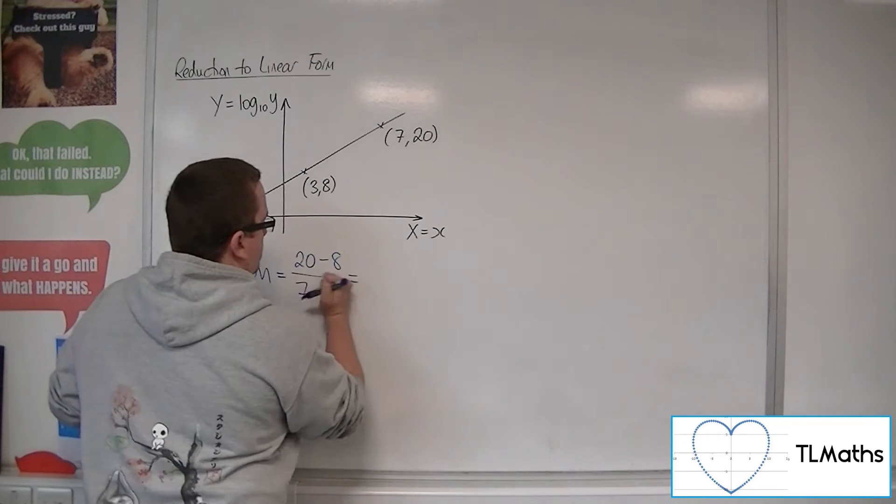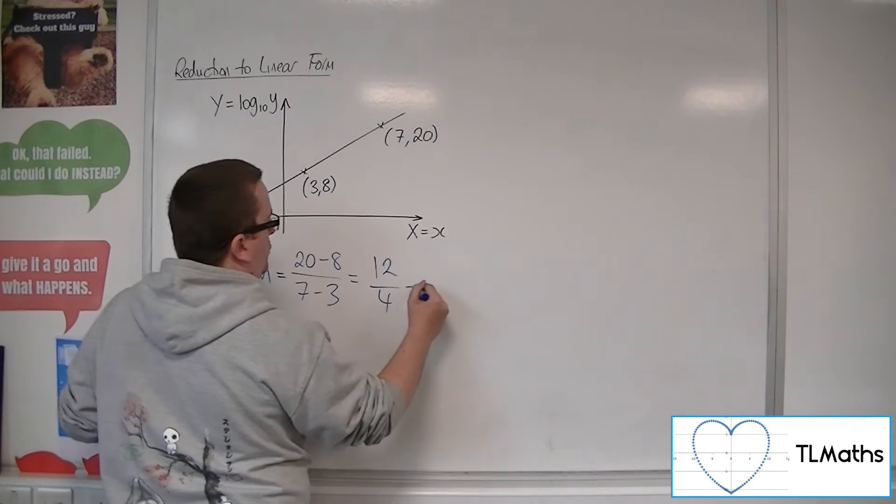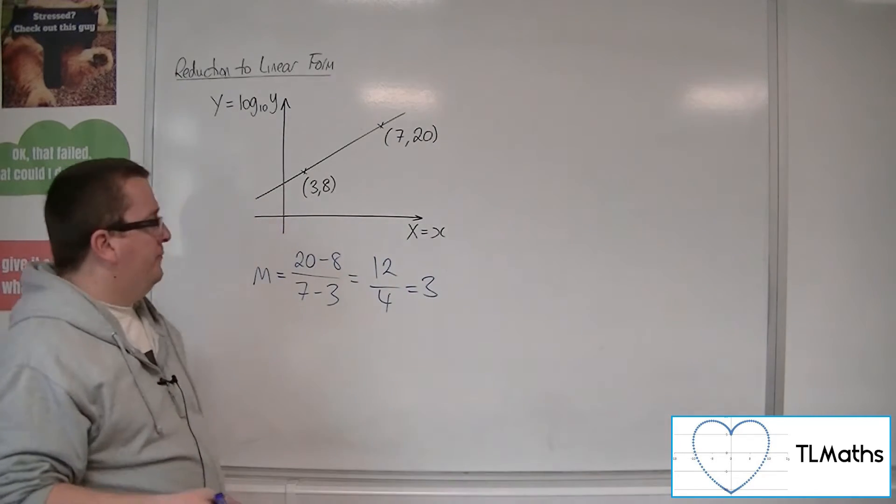Oh, sorry, that's a 3. So 20 take away 8 is 12, 7 take away 3 is 4, and so m is 3.